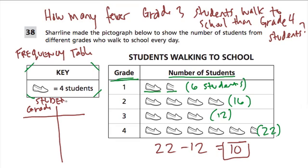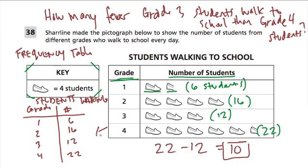Don't forget your title: 'Students walking.' Then here are the numbers — you write 'number of students.' You set the same thing up: first, second, third, and fourth grade, and the number of students that walk: 6, 16, 12, and 22. All you're doing is taking the information from the pictograph and putting it into numbers. Just make sure you label your title and each column clearly — write 'number of students,' not just 'number' — so you can get full credit.